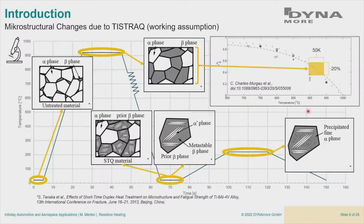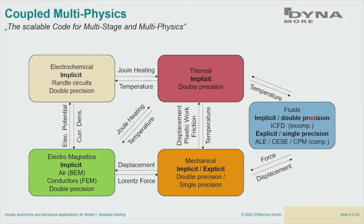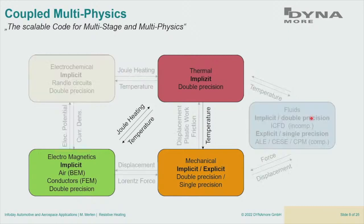The annealing step precipitates fine alpha grains inside the metastable phase. Overall, we don't have good temperature behavior due to very low conductivity, and temperature is quite important for our process — this motivates the simulation. Luckily, I work with LS-DYNA and have several solvers to use. In my case I used three solvers and do a coupling between EM, thermal, and mechanical — though I neglect mechanics totally by constraining all nodes.